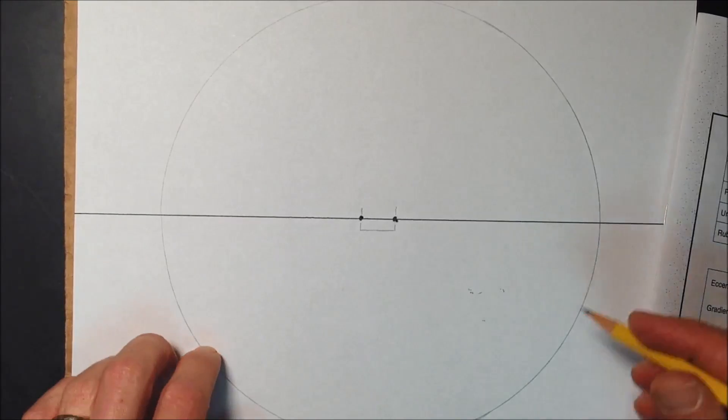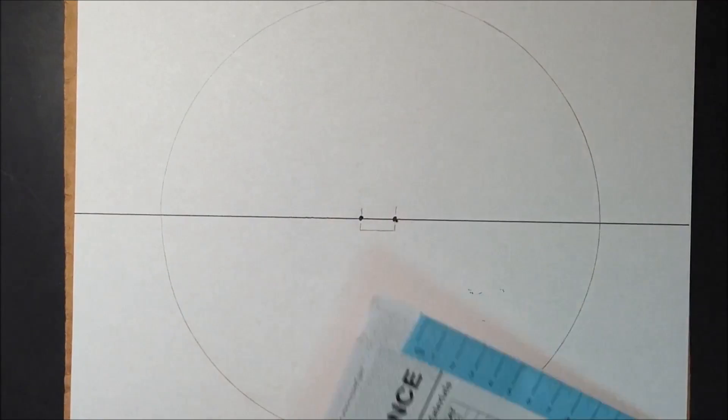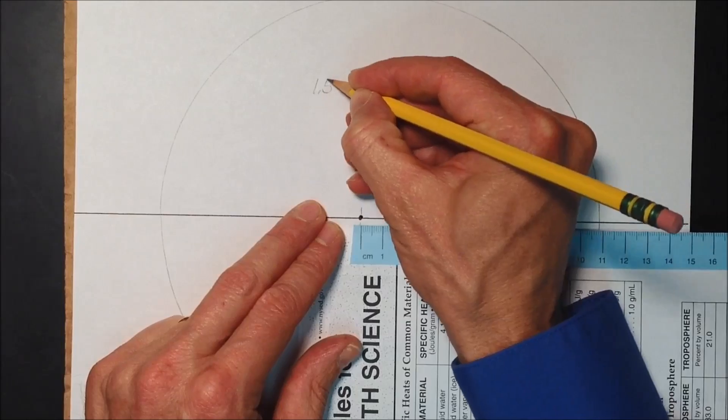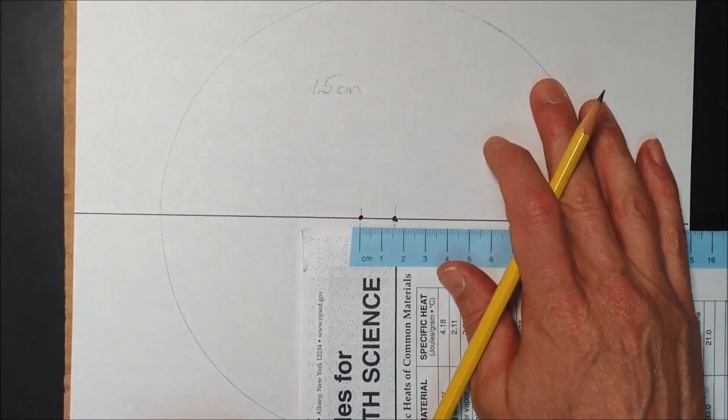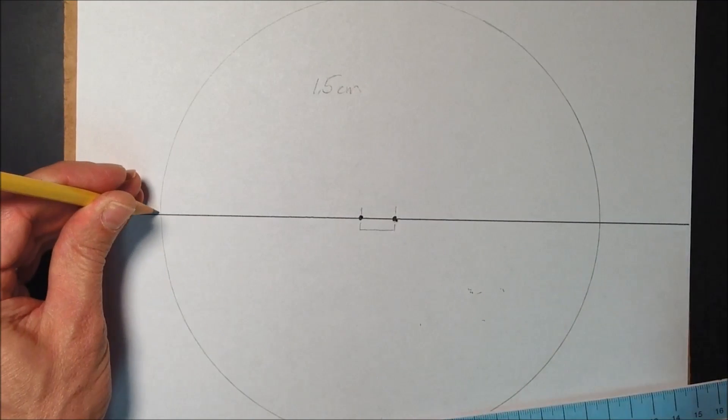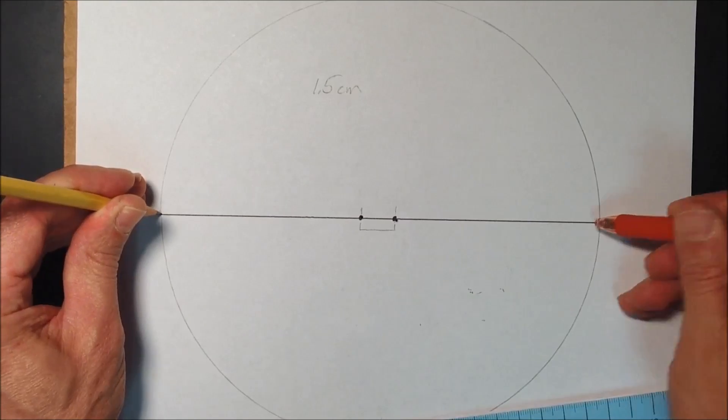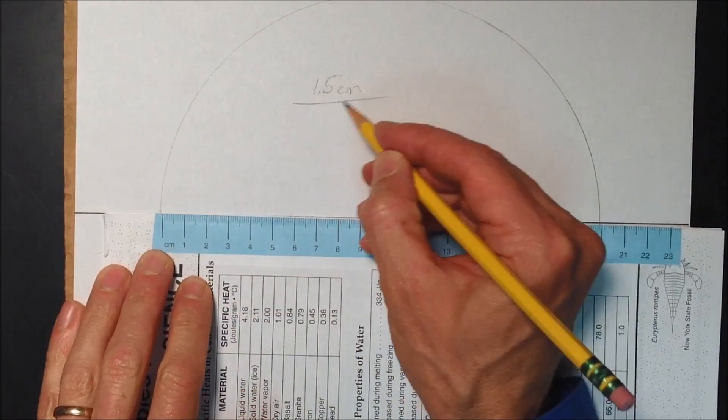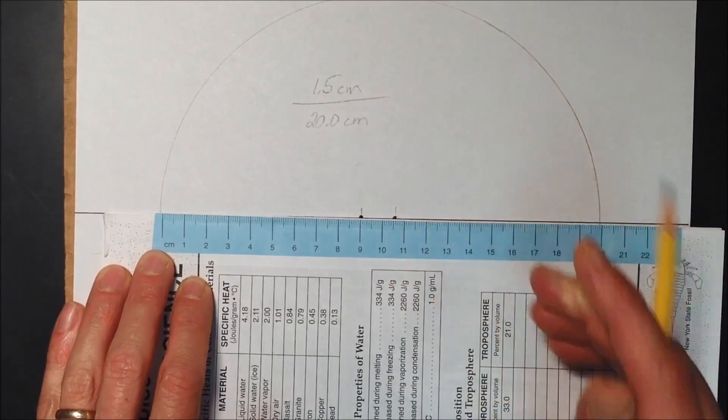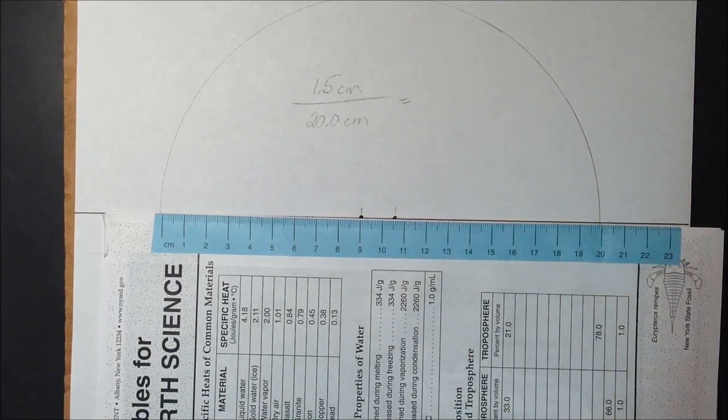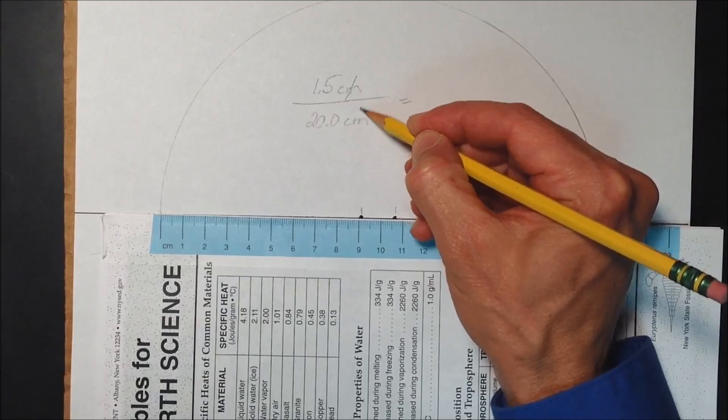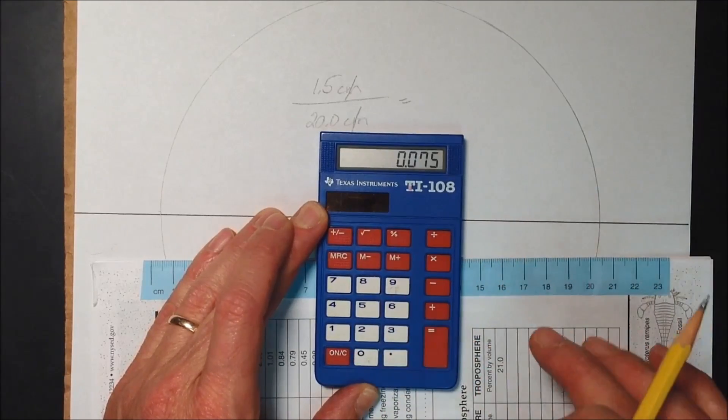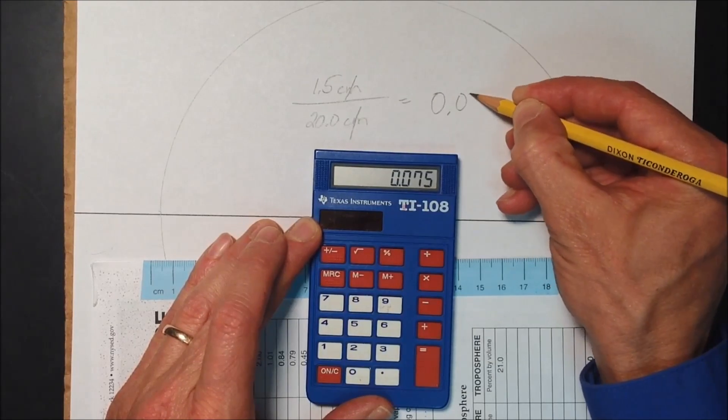Distance between the foci divided by length of major axis. So the distance between the foci is, we're going to measure it in centimeters, and I go right there. And that is 1.5 centimeters. And then the length of the major axis. The major axis is from here to here. That's the length of the major axis. So I'm going to measure that also in centimeters. That happens to be exactly 20 in my case, so I will write it 20.0. Now I'm going to do the math. The centimeters will cancel out. Centimeter over centimeter is one. They cancel. And then I'll do the math here.